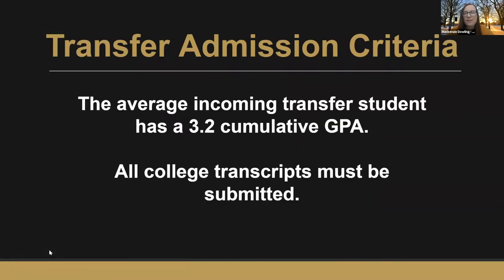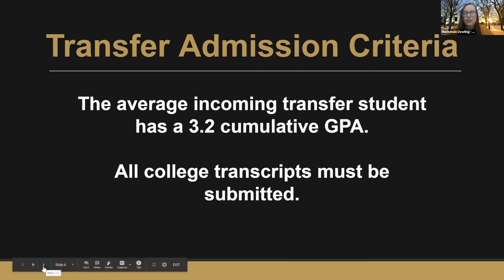This year we are very proud that our average incoming transfer student had a cumulative GPA of 3.2. Our application for admission is free online at oakland.edu/apply, and we require that students submit official transcripts from any and all institutions attended since high school. Generally, transfer students with a 2.5 cumulative GPA or higher are admitted. Transfer students who have earned an associate's degree and have a minimum 2.0 cumulative GPA are also generally considered for admission.